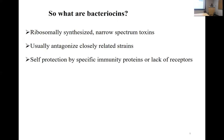Bacteriocins are ribosomally synthesized, meaning they are proteins or peptides with structural genes encoded in bacterial genomes — unlike antibiotics, which are secondary metabolites without easily identifiable structural genes. This makes bacteriocins a good tool given today's genetic engineering capabilities. They also have a narrow spectrum of activity, meaning the microbiome is largely safe. They typically antagonize closely related strains, providing a competitive advantage, with self-protection via immunity proteins or lack of receptor in producing cells.